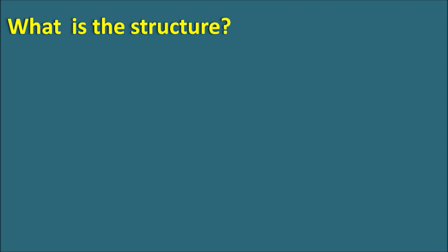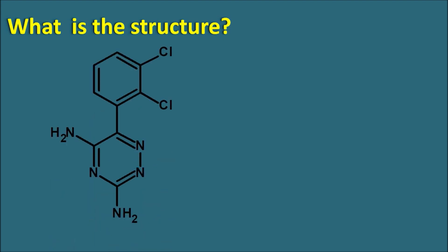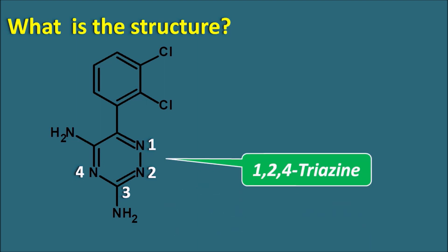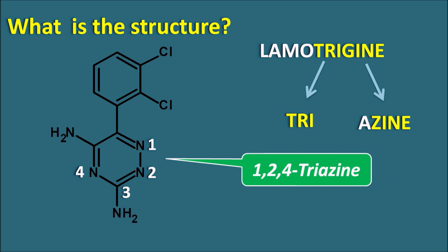Now let us see the structure of lamotrigine. This drug has a heterocyclic ring system with three nitrogens, numbered at positions 1, 2, and 4. Since it is a six-membered ring system with three nitrogens, it is a triazine — specifically 1,2,4-triazine. Lamotrigine is a 1,2,4-triazine derivative with a phenyl group at the fourth position, so it is sometimes called phenyl triazine. The name lamotrigine is derived from this ring system — the suffix 'trigin' indicates the triazine moiety, where 'trigin' represents tri plus azine (triazine).